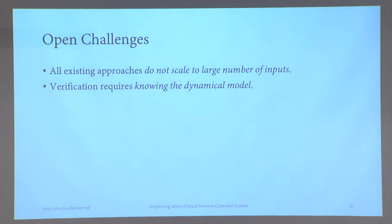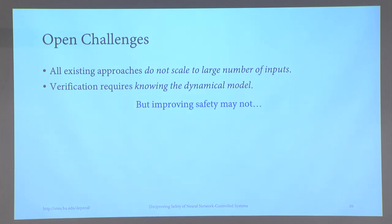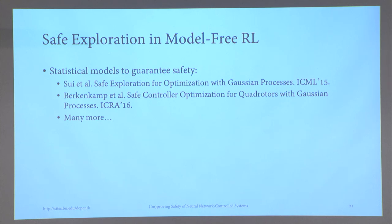Open challenges: all state-of-the-art methods for verifying neural network controller reachability cannot scale to large numbers of inputs, so we cannot yet verify end-to-end learning or image-based inputs. Verification also requires knowing the dynamical model. In practice, you may have a good idea of the model or some perturbation bounds, but you need the model. That said, you may be able to improve safety without knowing the model — even if you cannot formally prove reachability — and we study this in the setting of model-free reinforcement learning.